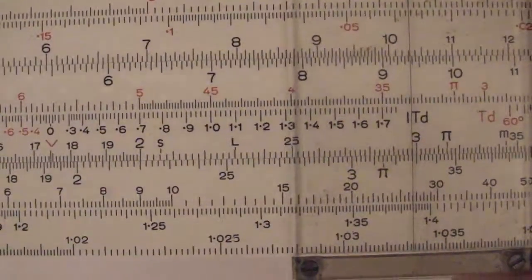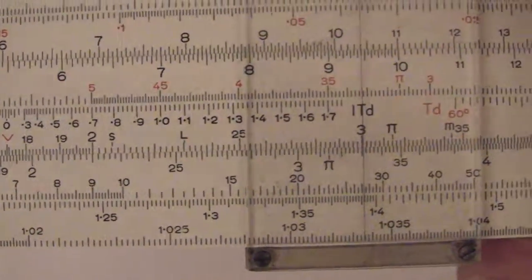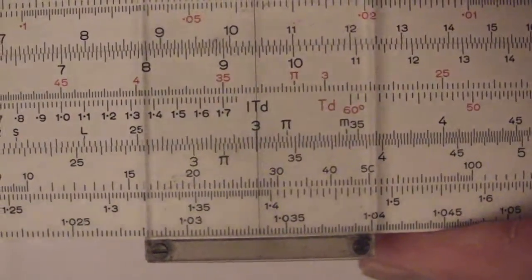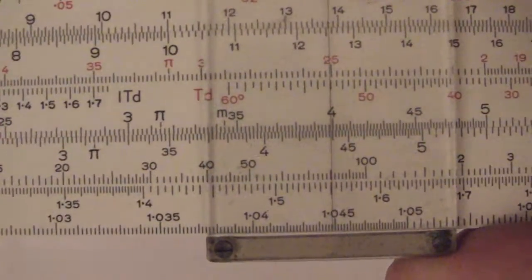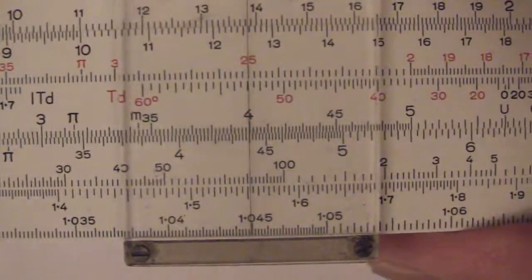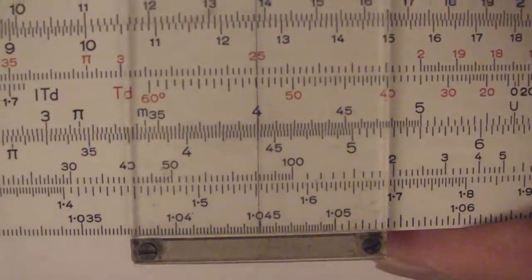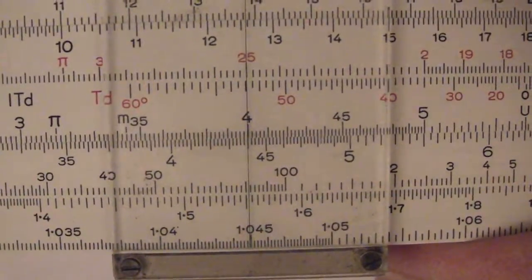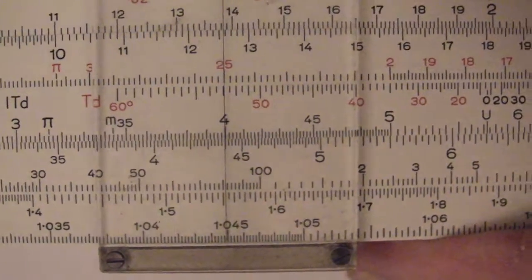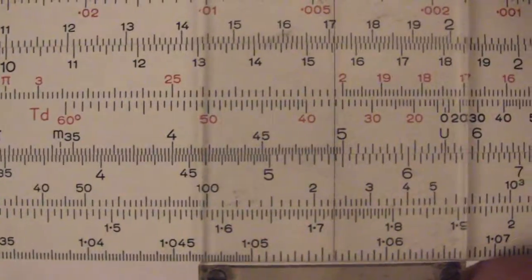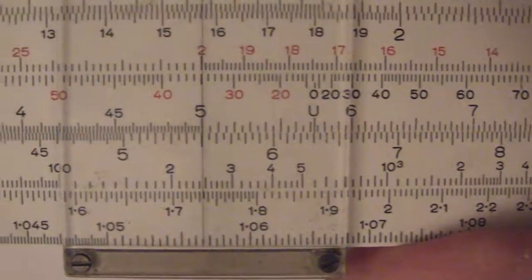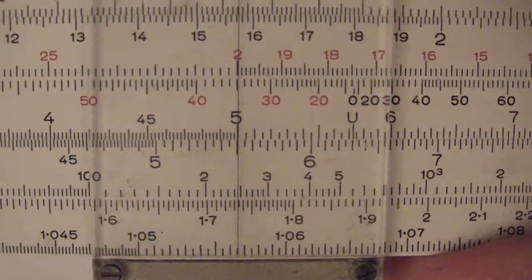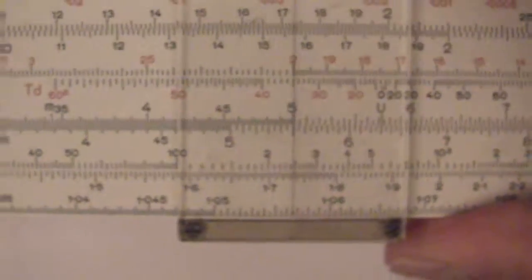3 cubed. We slide our cursor along to 3, and we can read off 27. If we raise our number to the power of 4, 3 to the 4, that's 81. And then if we raise it to the power of 5, we should be able to read off there about 243. So you get the idea.